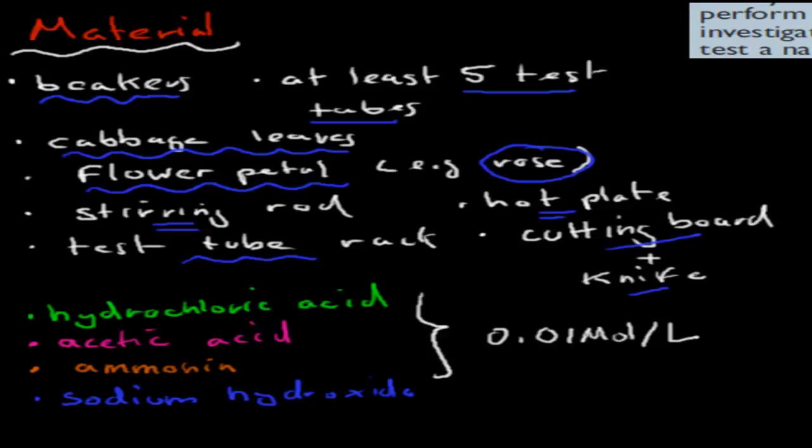You also would have had hydrochloric acid, acetic acid, ammonia, or sodium hydroxide solution. It doesn't have to be exactly the same ones. But just one strong acid, that's hydrochloric acid. One weaker acid, that's acetic acid. One strong base, that's sodium hydroxide. And one weaker base, which is ammonia. For all of them, you would have had the same concentration, 0.01 molar in this case.